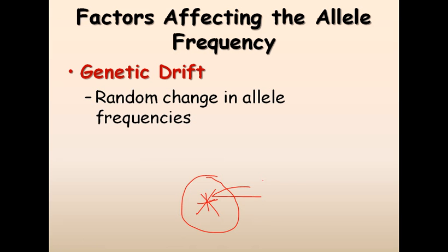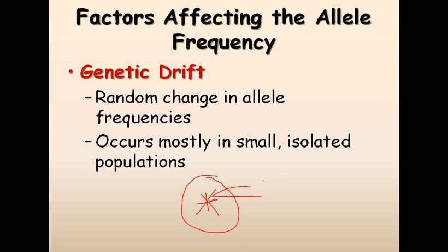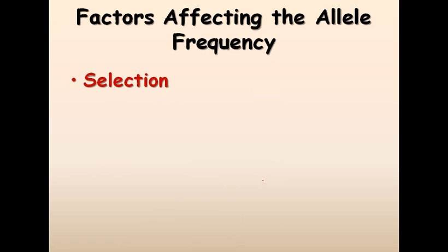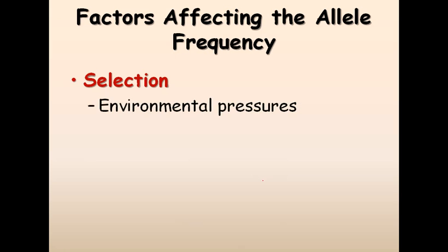Genetic drift refers to random changes in allele frequencies. It happens most often when the population size becomes smaller and isolated, because when a population is small and isolated, the chances of allele frequency changing are greater, according to the probability concept in mathematics.